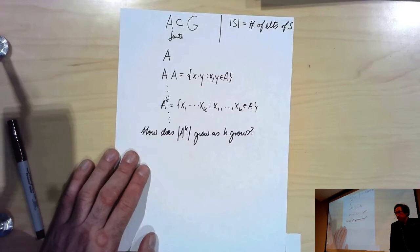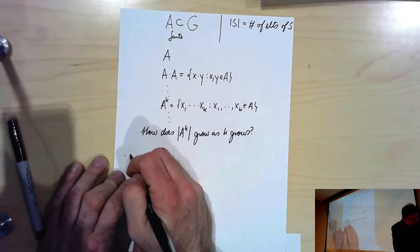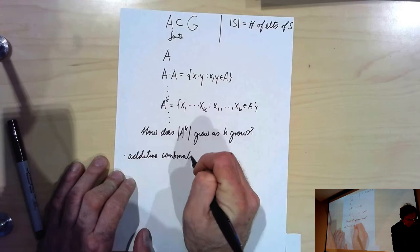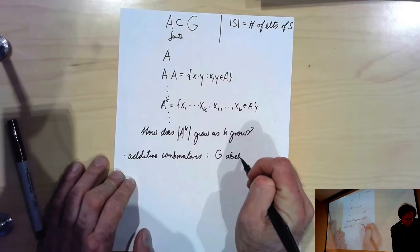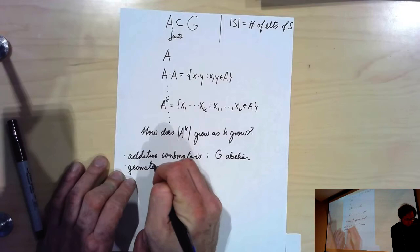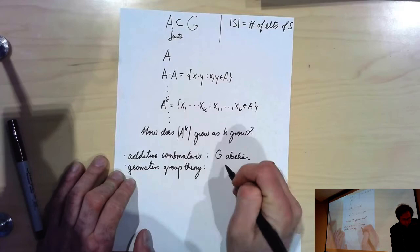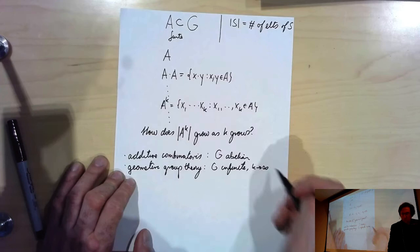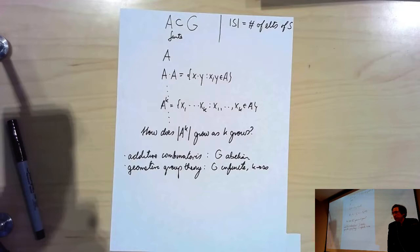This is a question that has been studied from several different perspectives. There's additive combinatorics, which traditionally studies the case of G abelian. And then there's geometric group theory, which typically works with G infinite and deals with really the very large scale — K going to infinity. Of course, if we were working with G finite, it doesn't make much sense to ask what happens when K goes to infinity, because if A generates G, A to the K eventually becomes equal to the entire group and then stays constant.